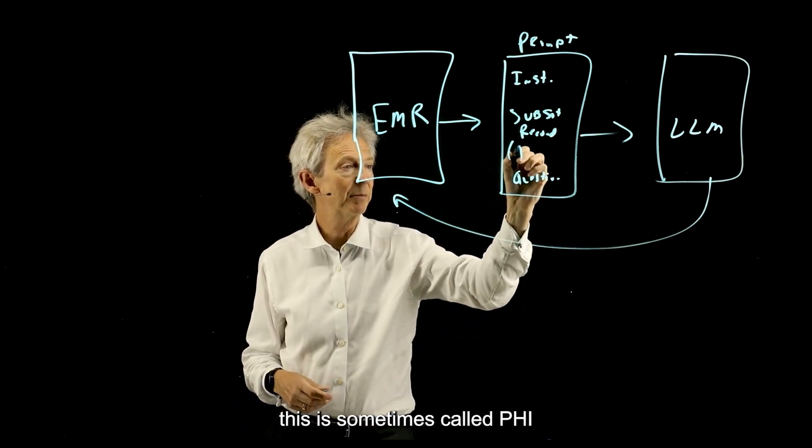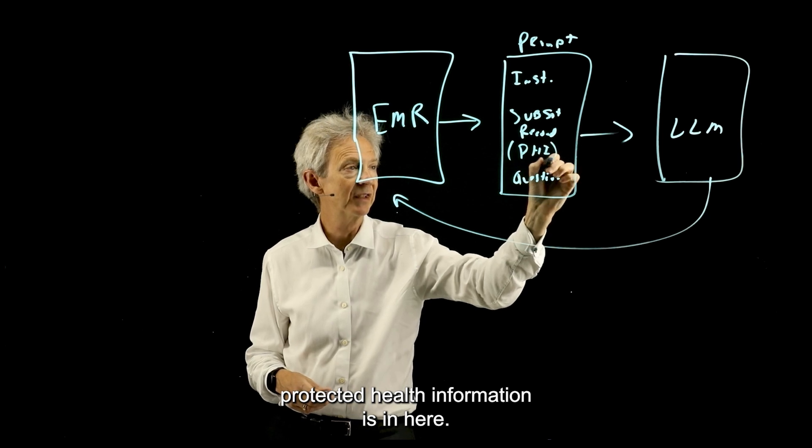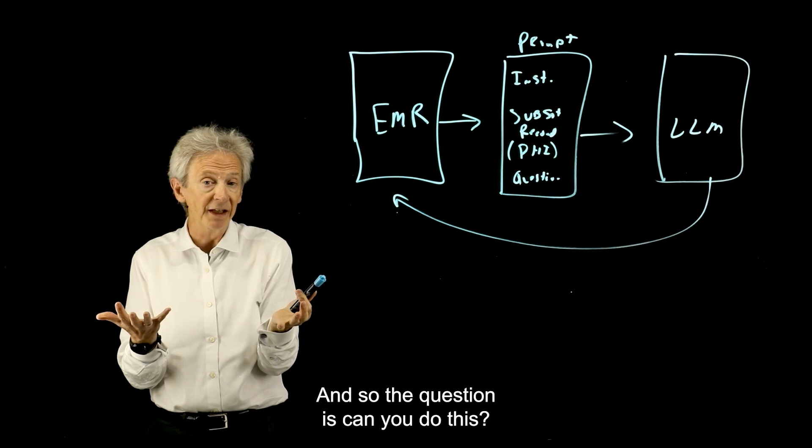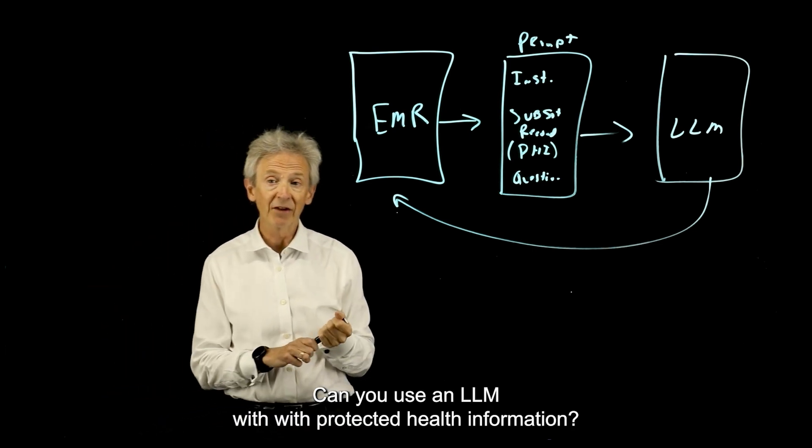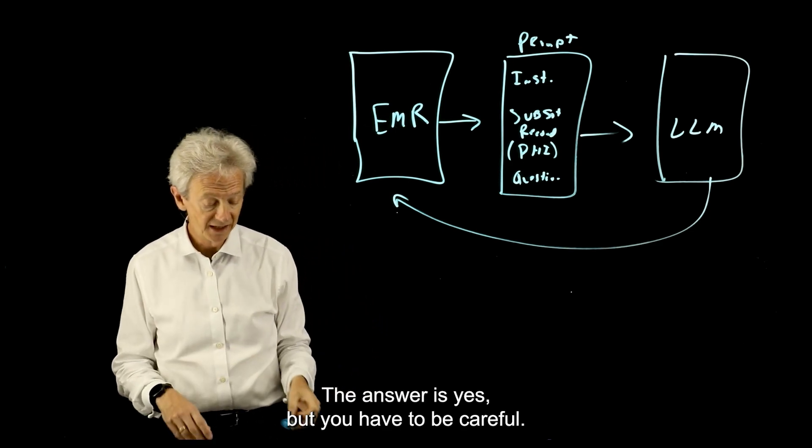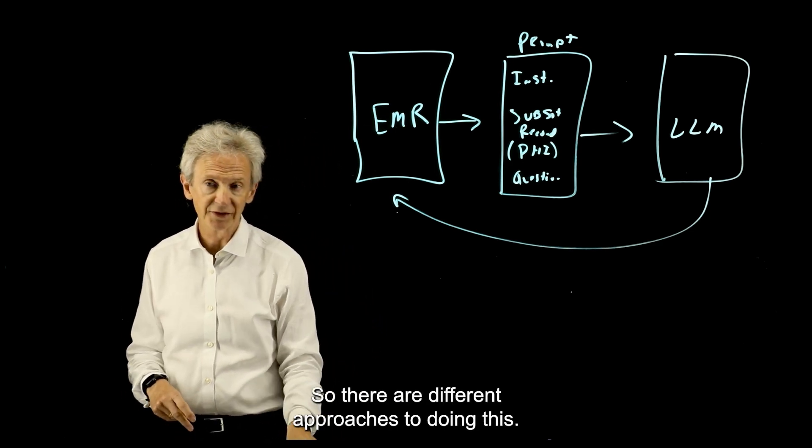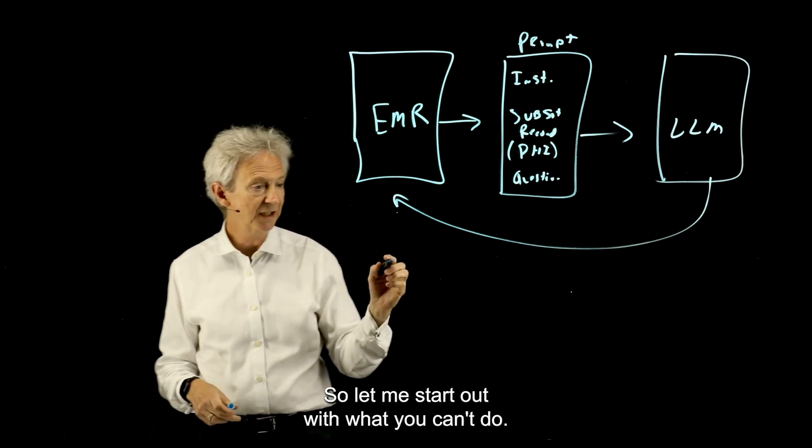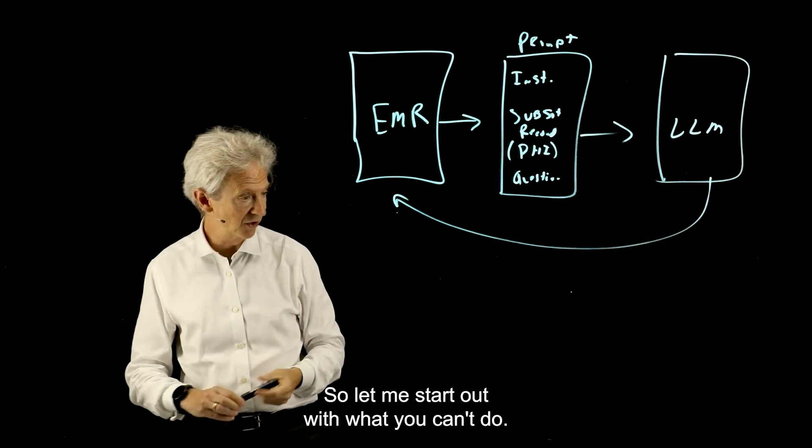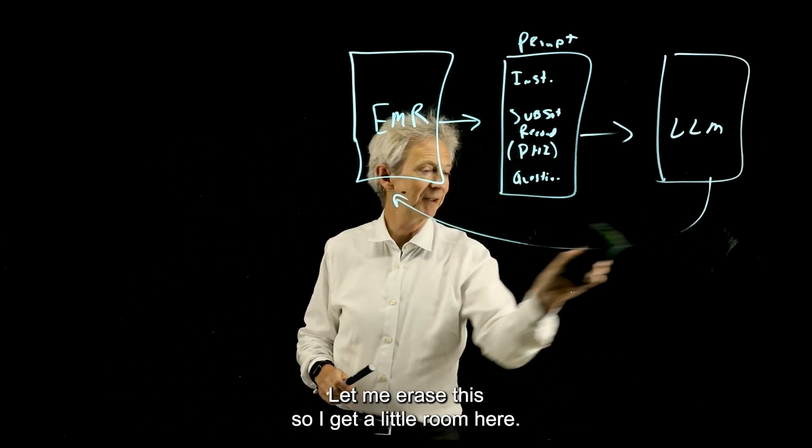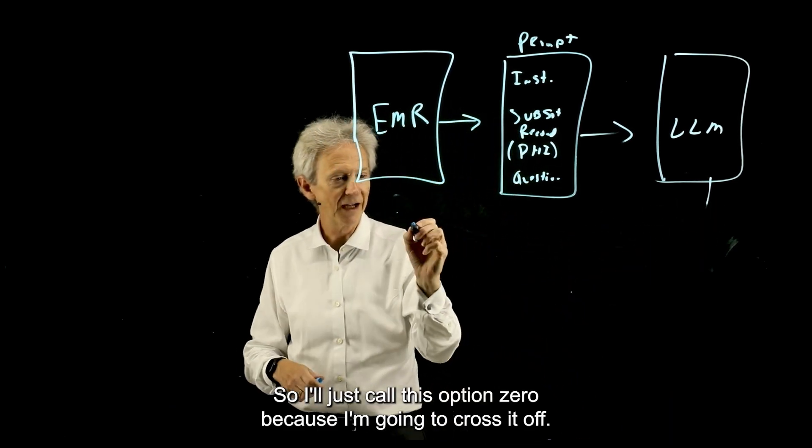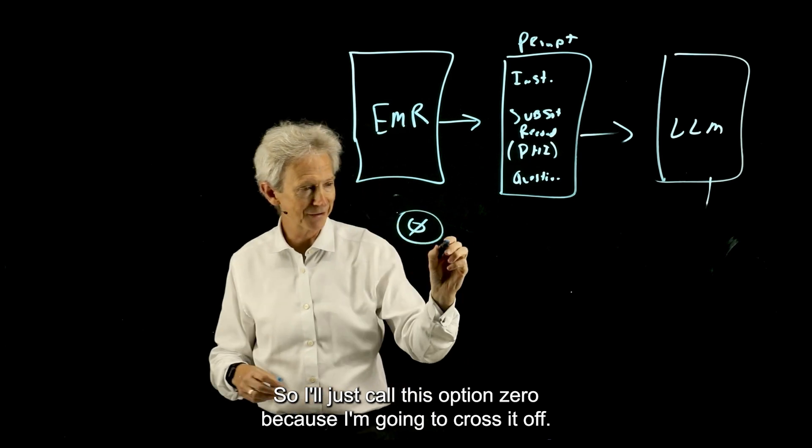Okay, so RAG system is basically augmenting just the question with some of these retrieved information like the patient medical record. This is sometimes called PHI, protected health information. And so the question is, can you do this? Can you use an LLM with protected health information? The answer is yes, but you have to be careful. So there are different approaches to doing this. So let me start out with what you can't do.